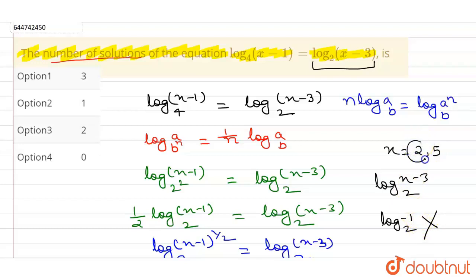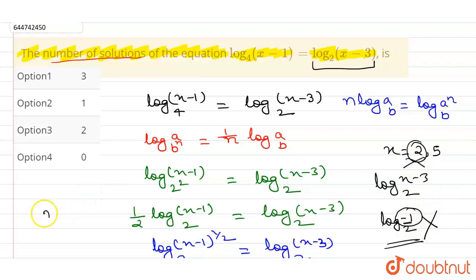Since log of a negative number is not defined, we cannot take x equals 2. So the correct answer is x equals 5. Therefore, the number of solutions is 1, which is option 2. Thank you.